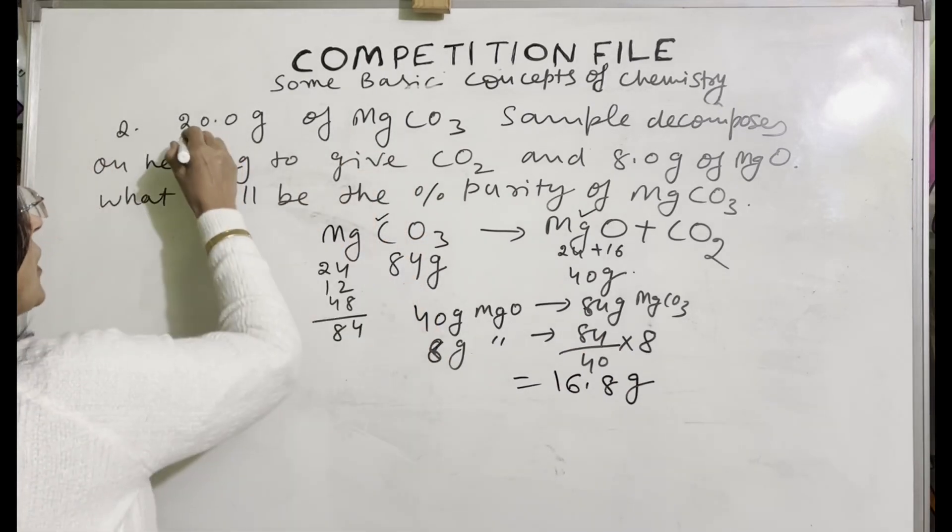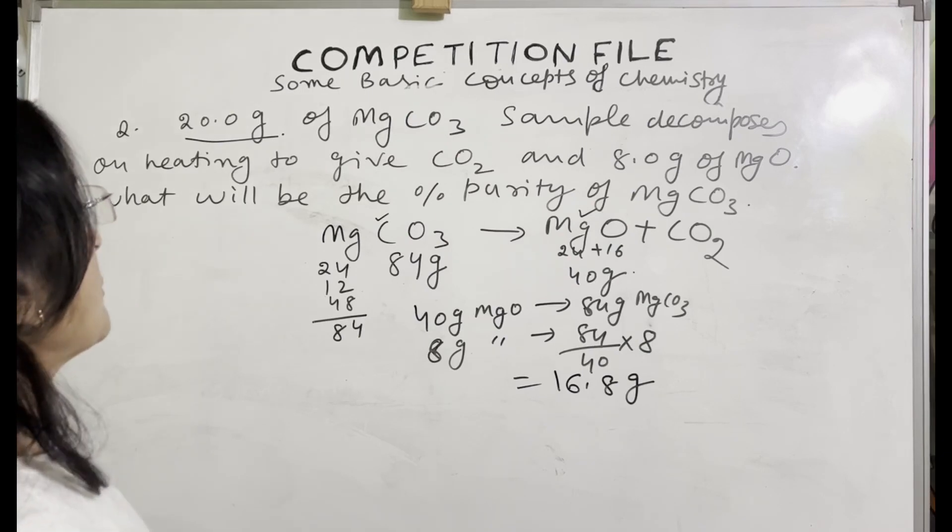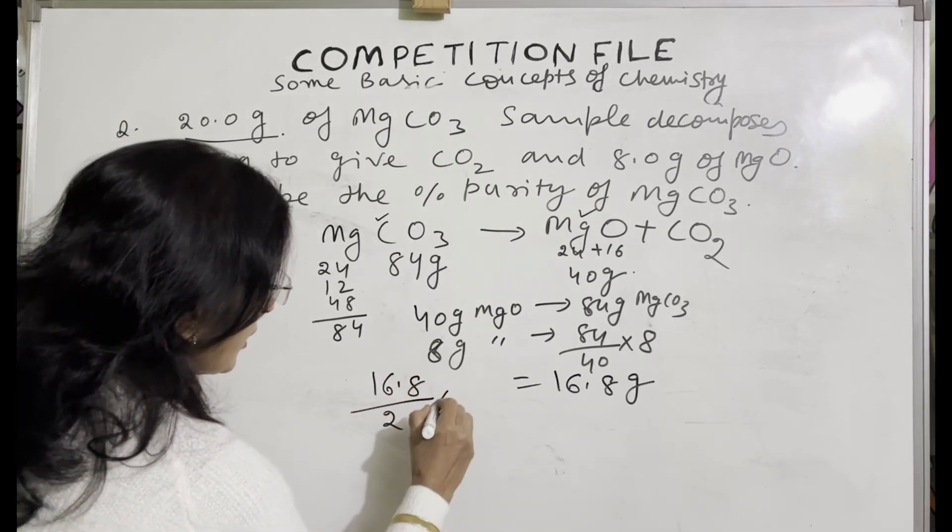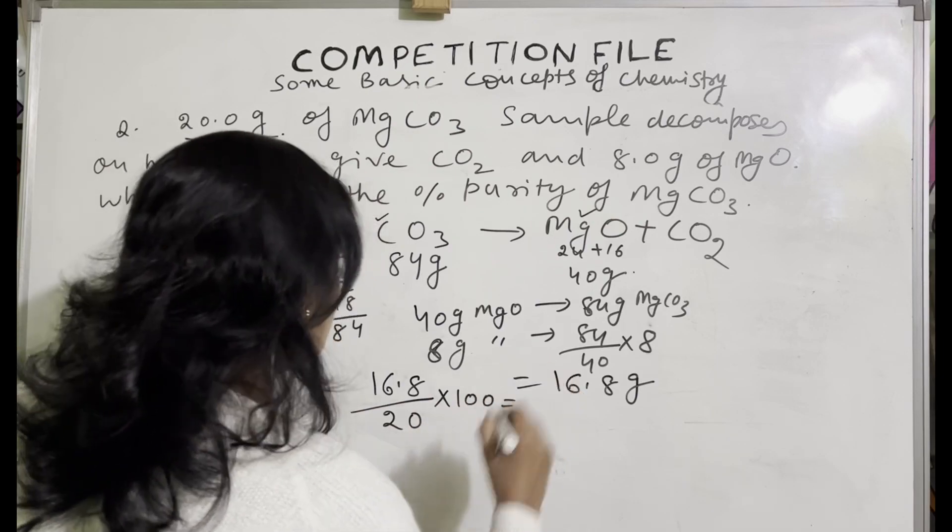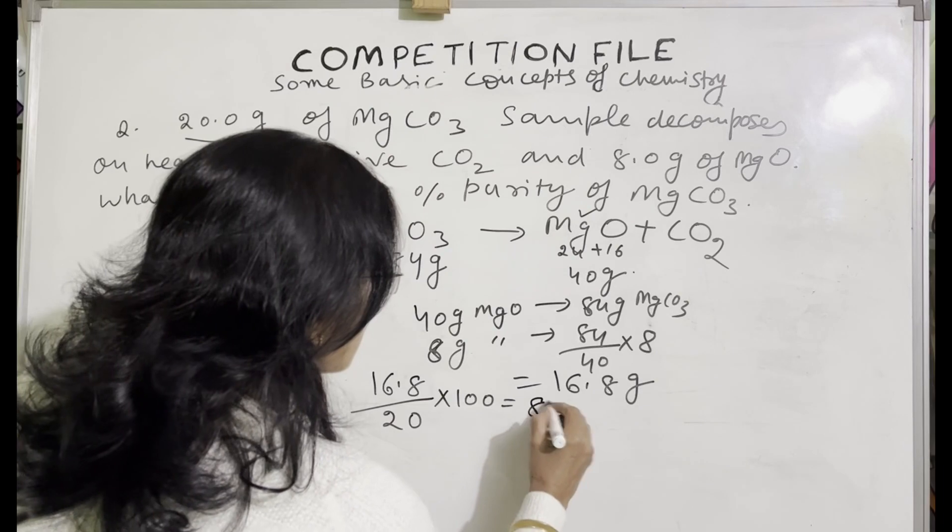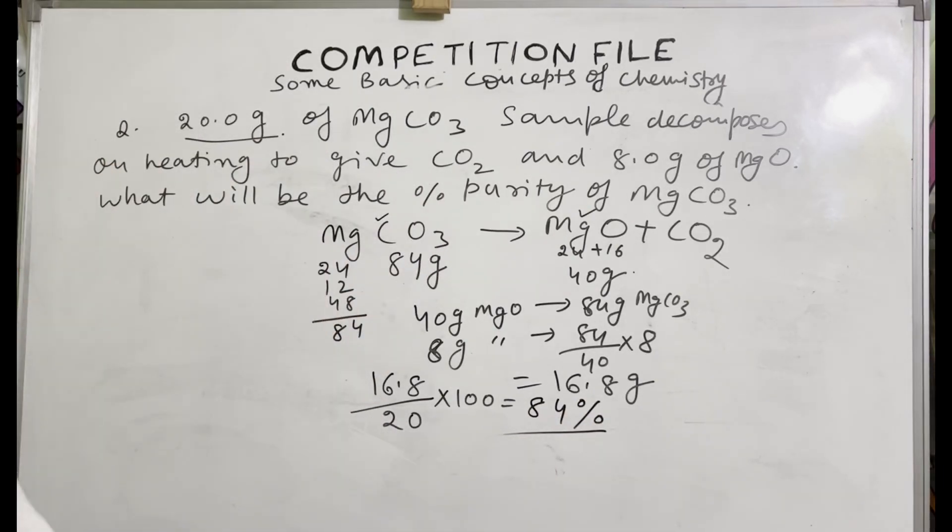We are given 20 grams. So what will be the percentage of purity? So 16.8 divided by 20 into 100. This will be the percentage of purity and it comes 84 percent. So percentage of purity will be 84 percent.